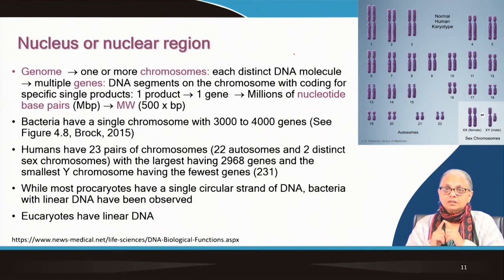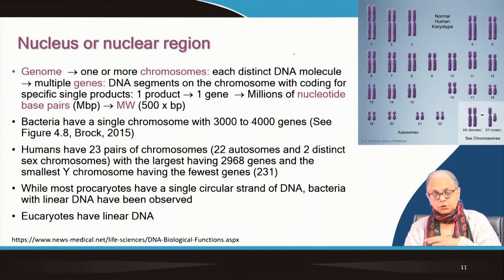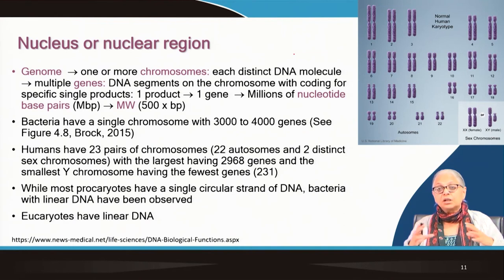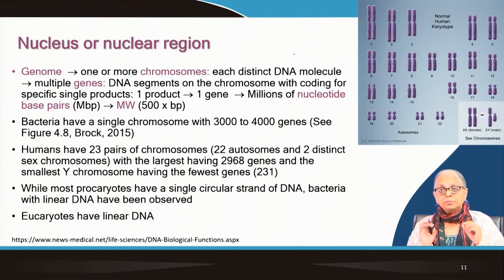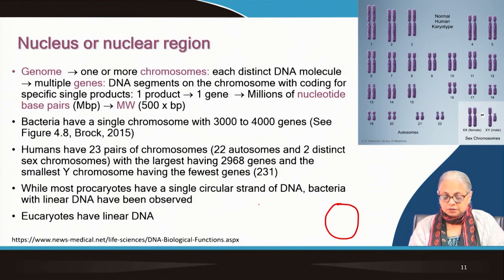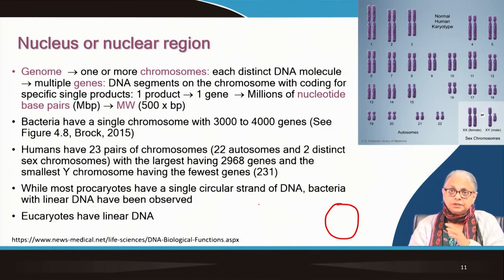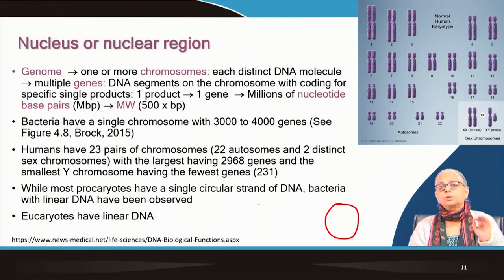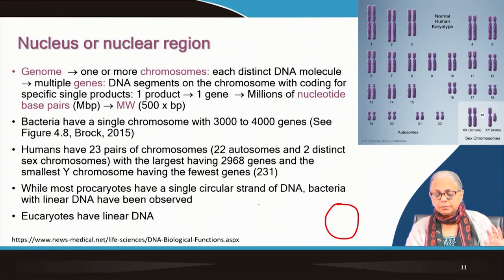Prokaryotes have a single circular strand — a very, very long strand with a lot of information encoded in it, but represented as a simple circle — that is one single chromosome in a prokaryote. On the other hand, eukaryotes all have linear DNA; they do not have circular chromosomes. There are a few exceptions in the literature where bacteria with linear DNA have been reported, but by and large all prokaryotes have circular double-stranded DNA.